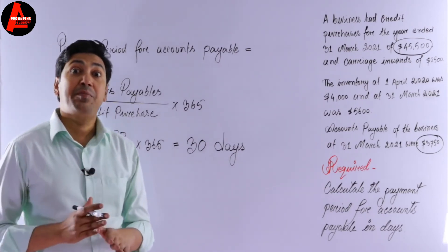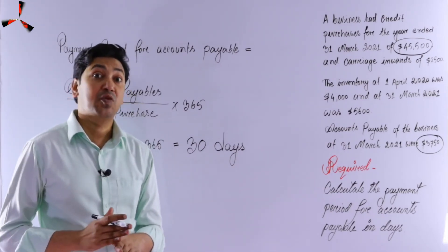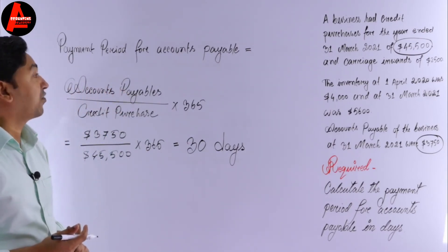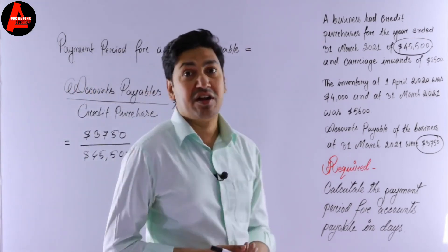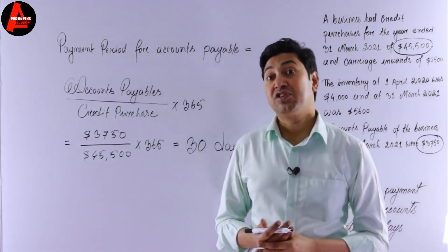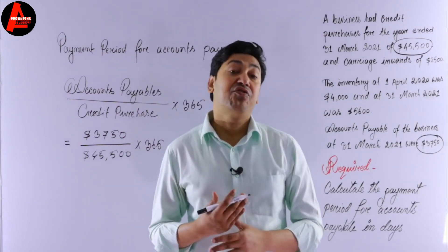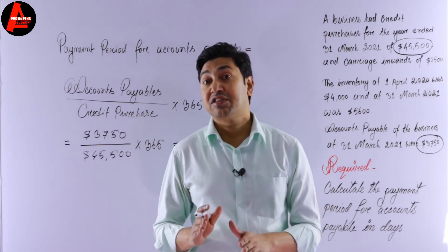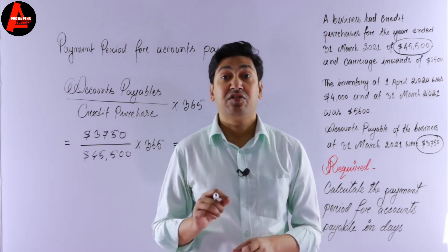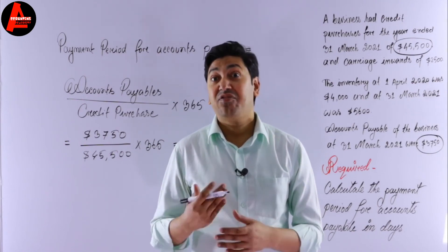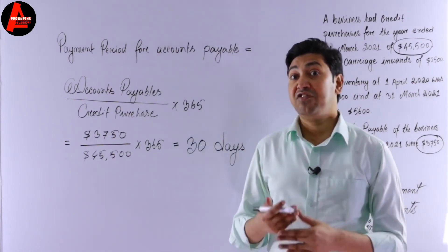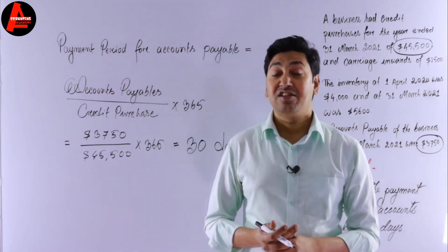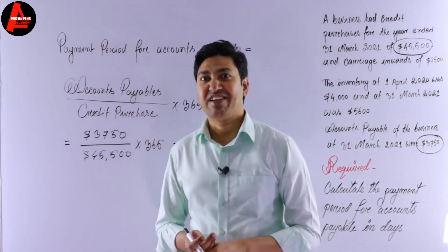So what does 30 days mean? It means that the payment must be cleared within 30 days. This is how you calculate the payment period for accounts payable. I hope you enjoyed this lesson. For more free video lessons, visit my channel. If you found this video helpful, please share it with your friends. I'll see you soon with a new video — until then, bye bye and take care.